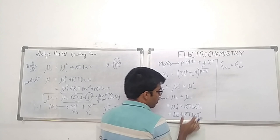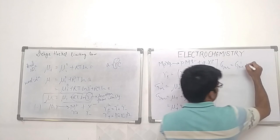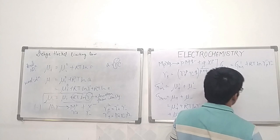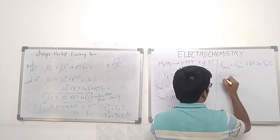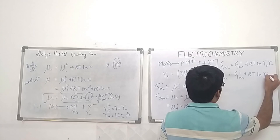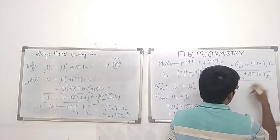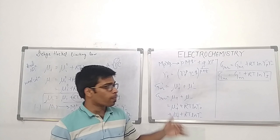The product γ₊ · γ₋ can be written in terms of the mean ionic activity coefficient, so we get G_real equals G_ideal plus RT ln γ±. This is the relation showing the change in energy due to deviation from ideality in electrolyte solutions.